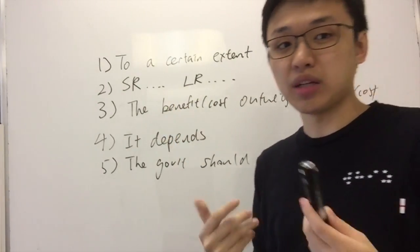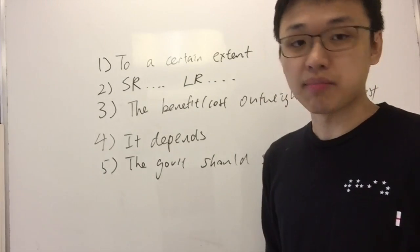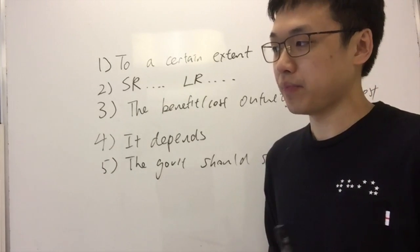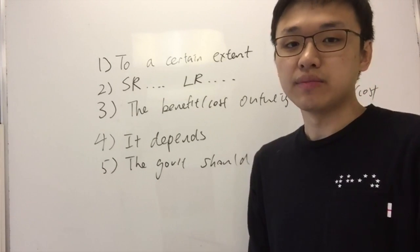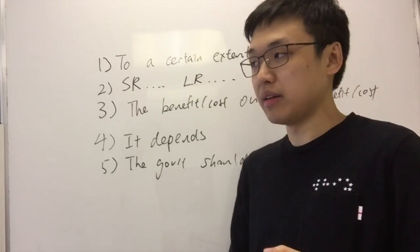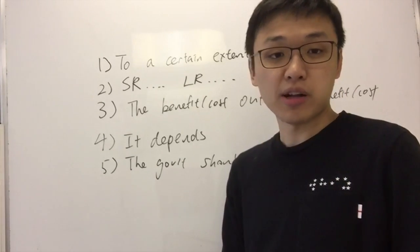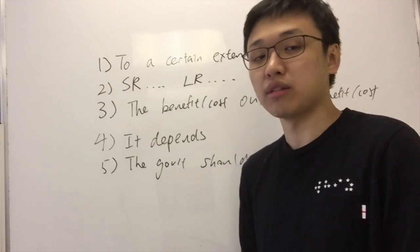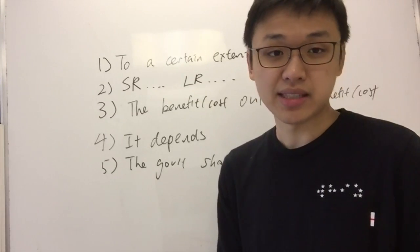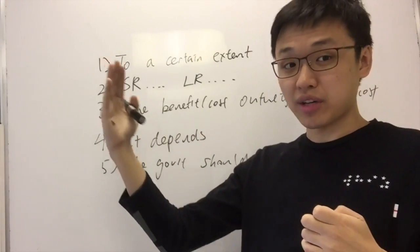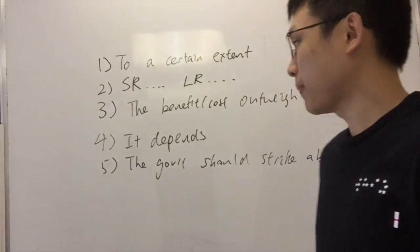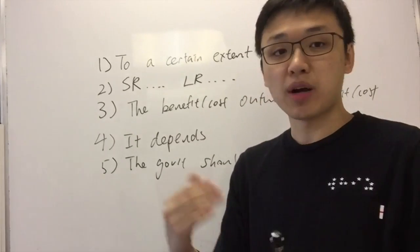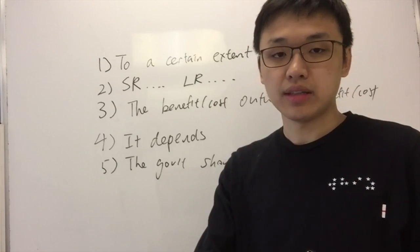If you use 'to a certain extent' for interest rates, you can say: 'To a certain extent, the interest rate can reduce inflation by reducing aggregate demand.' However — and when you use 'to a certain extent,' you should always include a 'however' — you can say: 'Not all spending requires borrowing. Consumers and firm spending may not be very responsive to the interest rate. Therefore, aggregate demand may not be responsive to changes in interest rates, and the rise in interest rate may not be enough to bring down inflation.'